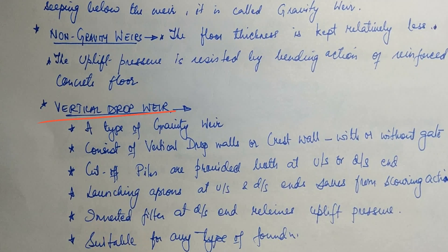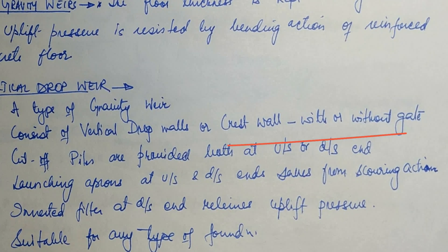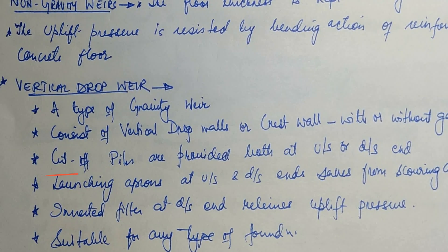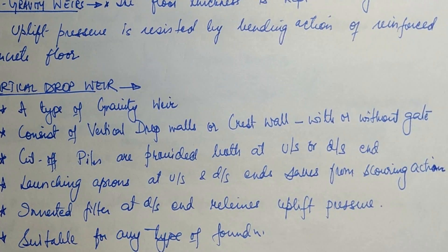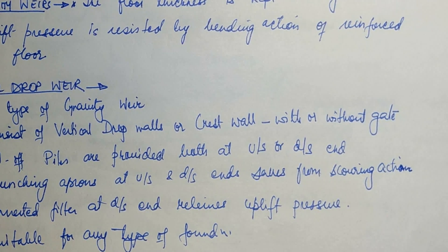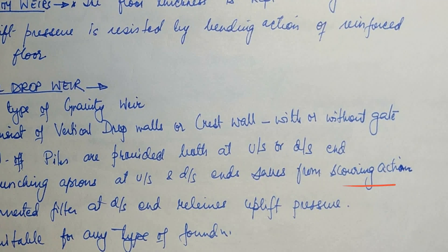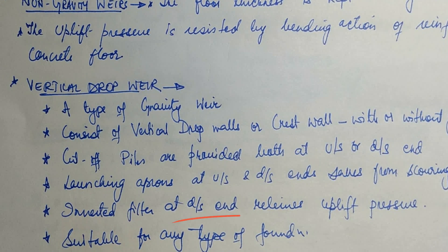A vertical drop weir is a type of gravity weir and consists of vertical drop walls or crest walls which can be provided with or without gates. Cutoff piles are provided at both the upstream and downstream ends, and launching aprons are also provided at both ends to save the weir from scouring action. Inverted filters at the downstream end relieve uplift pressure, and these types of weirs are suitable for any type of foundation.